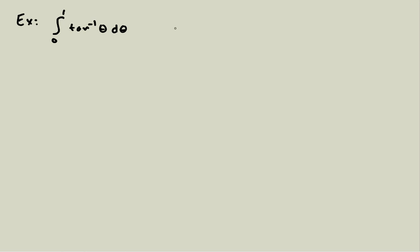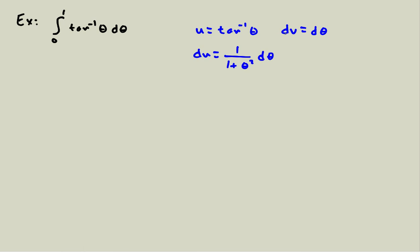I'm going to use the same idea as the logarithm case. The key is I want to take the derivative of inverse tangent, because I know that derivative but I don't know how to do the integral directly — that's a good sign that integration by parts will be successful. So u equals inverse tangent of theta, and dv is everything else, just d-theta. Then du is 1 over 1 plus theta-squared d-theta, and since dv is d-theta, v is just theta.